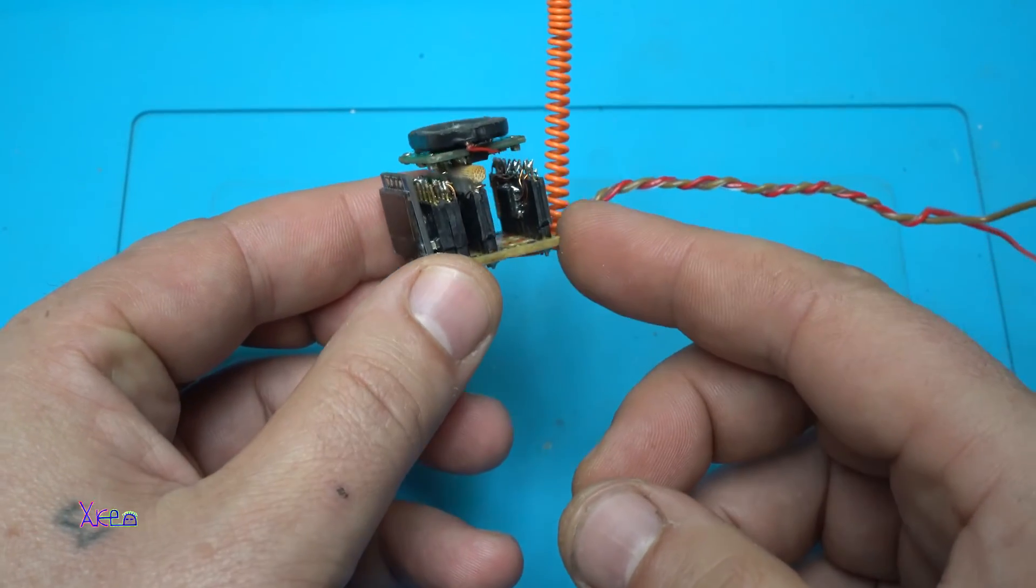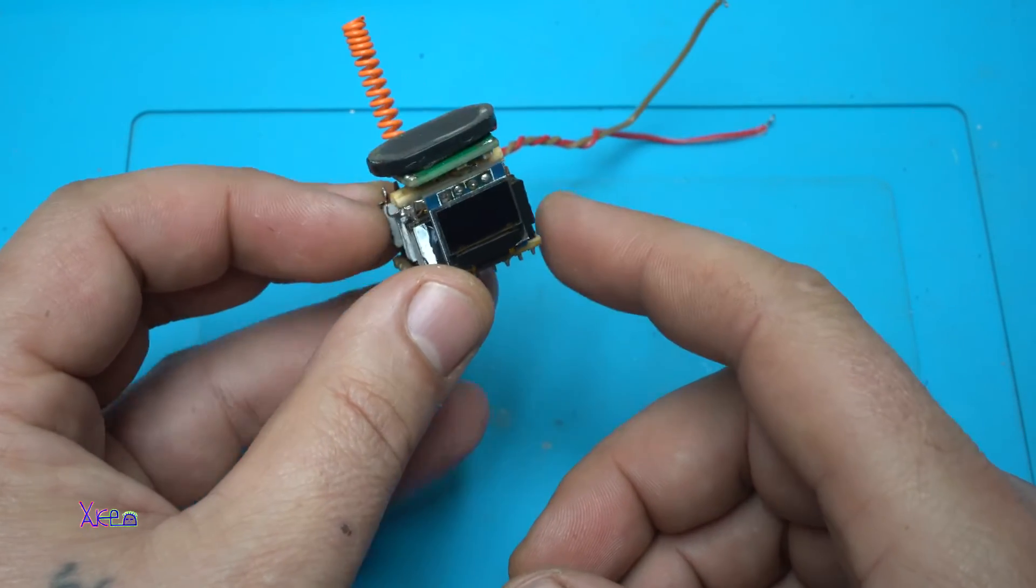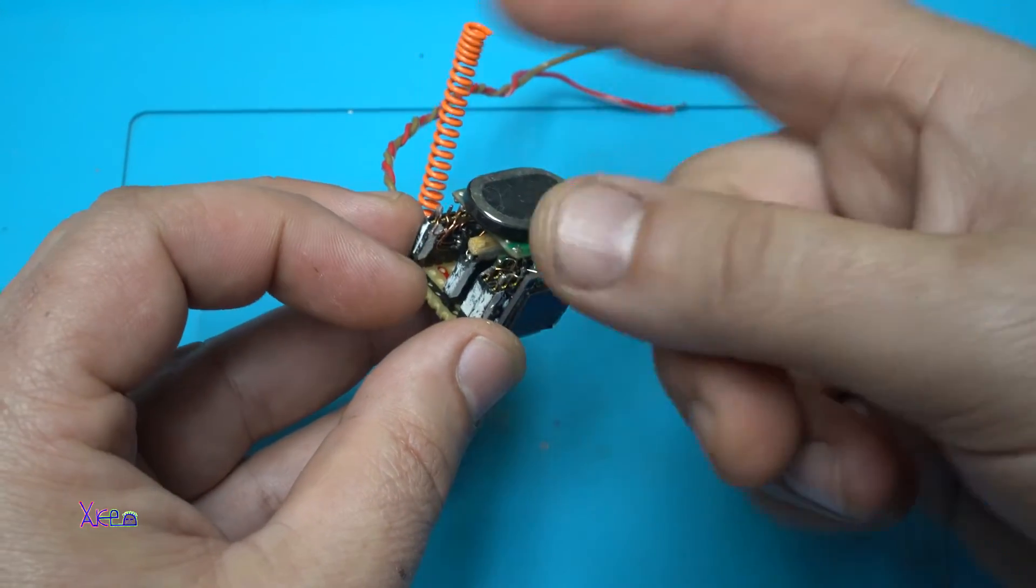It's so tiny and it's the smallest FM stereo radio receiver with OLED screen and antenna.